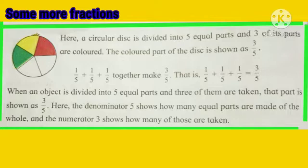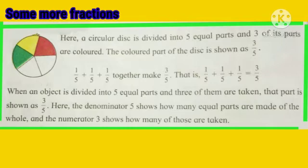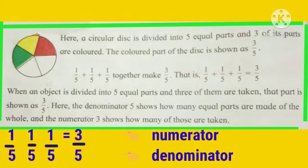Now, some more fractions. A circular disc is divided into five equal parts and three of its parts are colored. You can see in the picture — the disc is divided into five parts and only three parts are colored. The colored part of the disc is shown as three upon five. One upon five plus one upon five plus one upon five together makes three upon five. When an object is divided into five equal parts and three of them are taken, that part is shown as three upon five. The denominator is five — it shows how many equal parts the whole is divided into. The numerator three shows how many of those parts are taken.